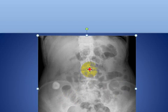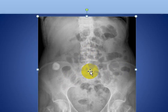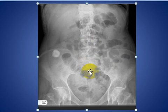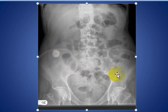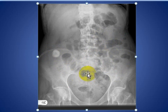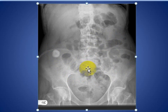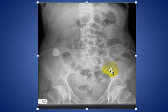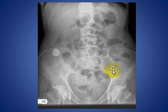Here you see laminated calcification in the right iliac fossa, associated with slightly distended abdominal gas, especially in the small bowel. This patient has abdominal pain and a history of Crohn's disease. This is a gallstone area.